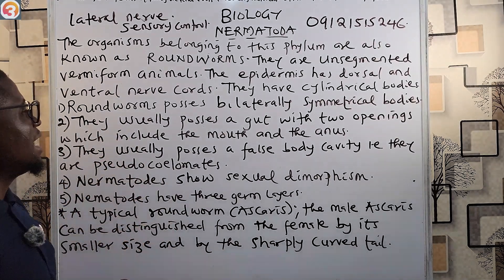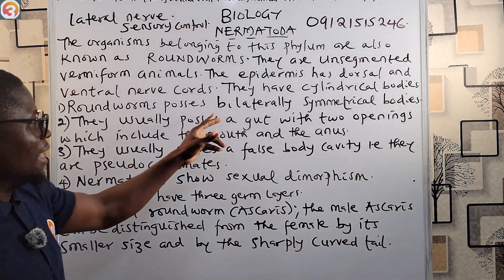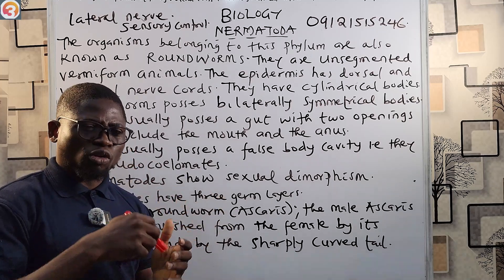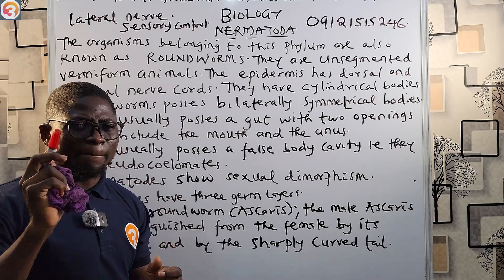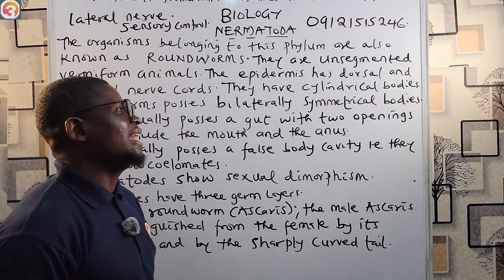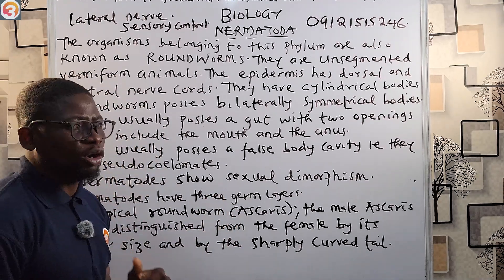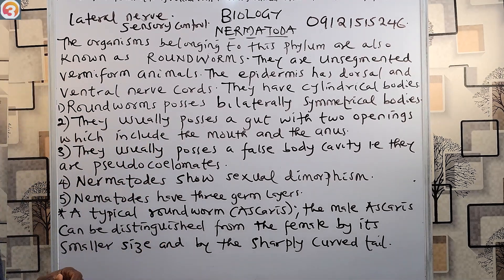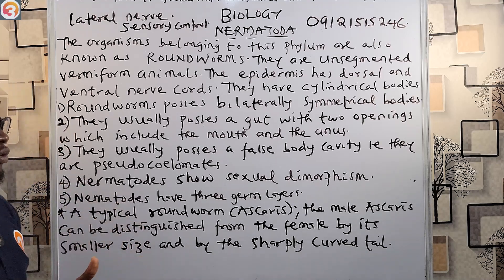Let's look at some of the characteristics of nematodes. First, roundworms possess bilaterally symmetrical bodies — meaning the body can be cut in only one plane into two identical halves. Second, they usually possess a gut with two openings, which include the mouth and the anus.